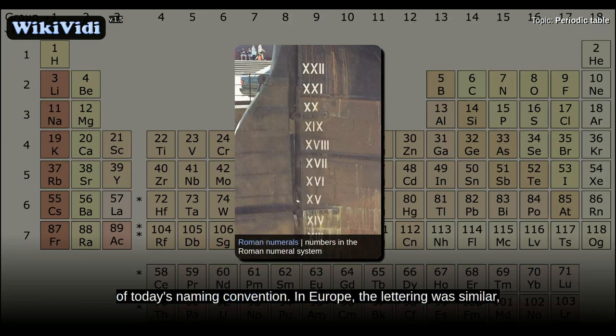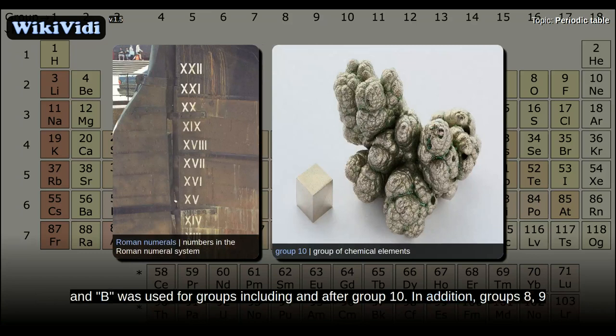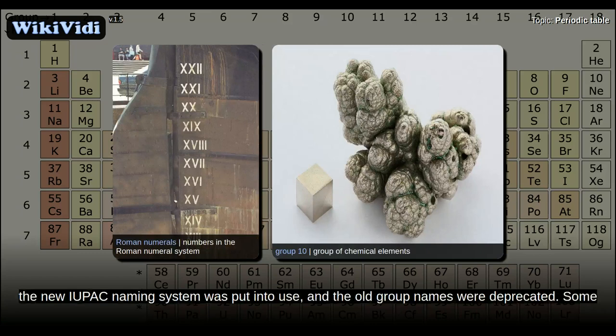In Europe, the lettering was similar, except that A was used if the group was before group 10, and B was used for groups including and after group 10. In addition, groups 8, 9, and 10 used to be treated as one triple-sized group, known collectively as group 8. In 1988, the new IUPAC naming system was put into use, and the old group names were deprecated.